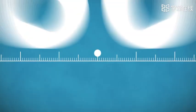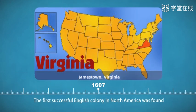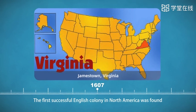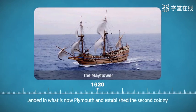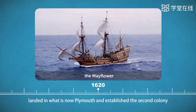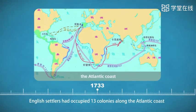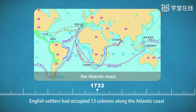The first successful English colony in North America was founded at Jamestown, Virginia in 1607. In 1620, the so-called Pilgrim Fathers sailed for Virginia on a ship called the Mayflower. They finally landed in what is now Plymouth and established the second colony. By 1733, English settlers had occupied 13 colonies along the Atlantic coast.